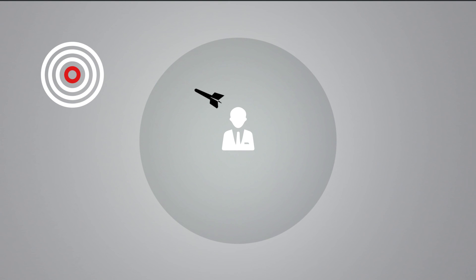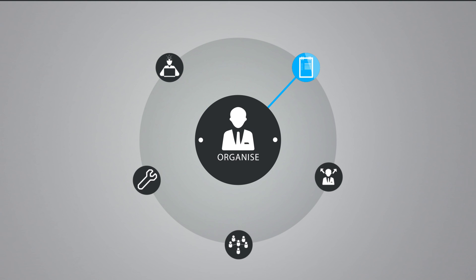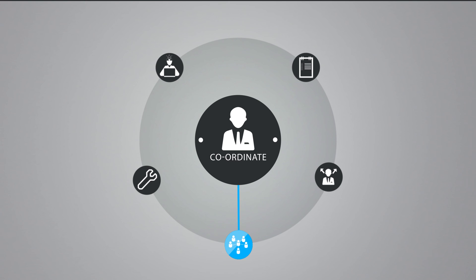As a manager, you work with a target of achieving certain organizational goals. You are expected to plan, organize resources, take decisions, coordinate with various functions, and finally take corrective actions to reach the organization goal. You use information generated by the accounting system for all these activities.